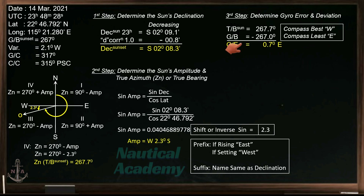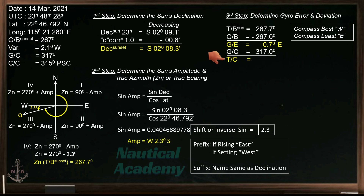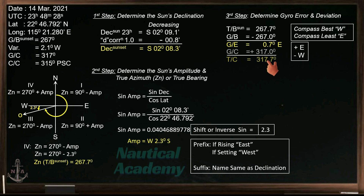Apply this gyro error to the gyro course to determine the ship's true course. If the gyro error is east, add it to the gyro course; but if it is west, subtract the gyro error from the gyro course. The ship's true course is 317.7 degrees.